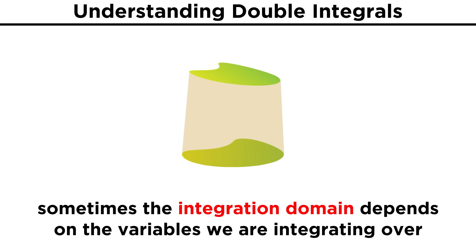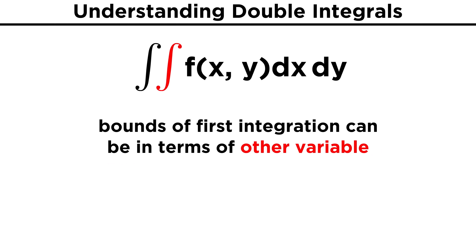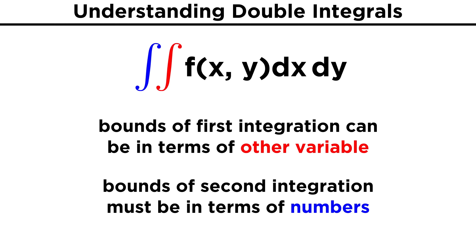What ends up making multiple integrals tricky is when the integration domain depends on the variables we're integrating over — for example, when the region we are considering in the xy plane involves curves rather than a rectangular area. In cases like this, we will have to be more conscious of how we write the bounds and the associated order of integration. What is likely to happen is that the bounds for the first integration will include the other variable, while the bounds for the second integration must be numbers, to get a final result that is also a number. This is an important aspect to remember when thinking about the boundaries.